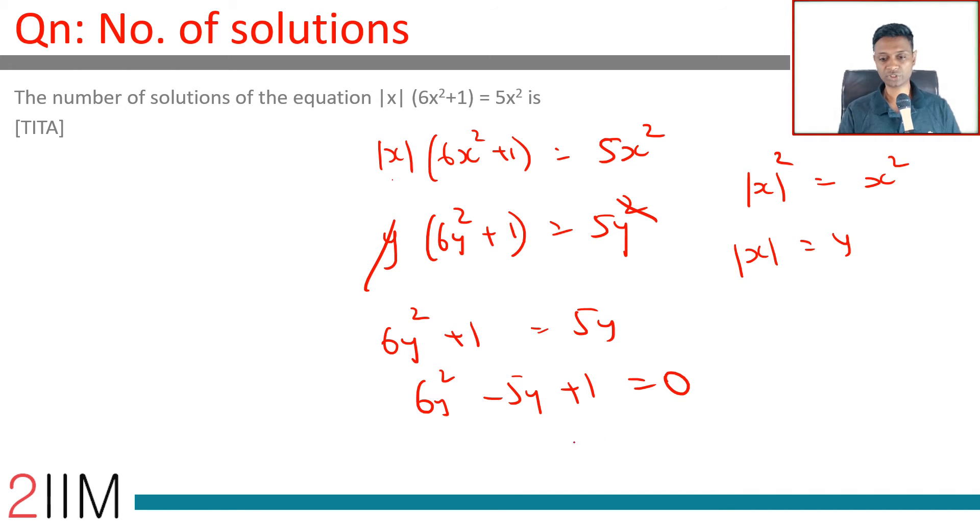Number of solutions. Brilliant. We break this. 6y² - 5y + 1. 6y² - 3y - 2y + 1.